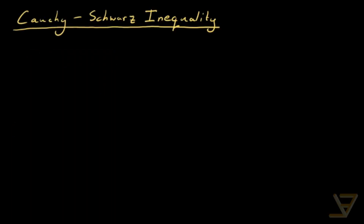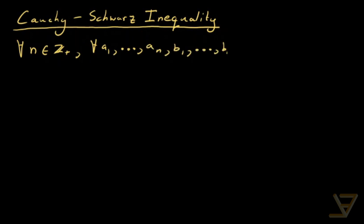Hi everyone. Let's talk about the Cauchy-Schwarz inequality. What it says is that for all n in the positive integers and for all a1 through an and b1 through bn in the real numbers. This is quite a strong inequality because we're not just restricted to positive reals or non-negative reals, but to all reals.